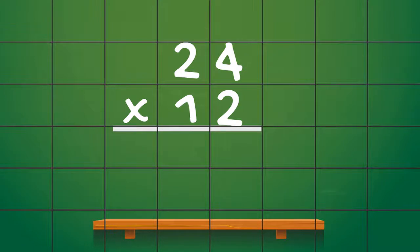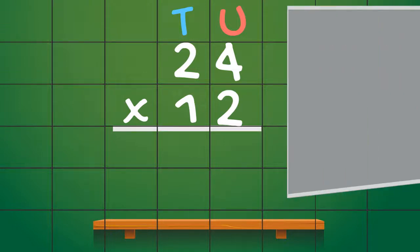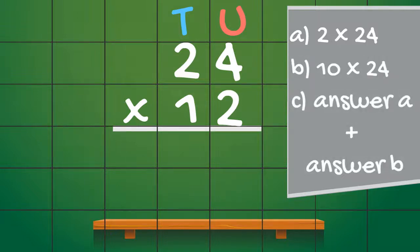Right, so the first thing we need is a sum. Let's use the same sum as the last video, 24 multiplied by 12. We're going to write our sum down, remembering to label our place value columns. Now even though it looks like one sum, what we have to remember from the last video is that there's actually three separate sums inside of here. There's 2 multiplied by 24, there's 10 multiplied by 24, and then these two answers need to be added together. So two multiplication sums and one addition sum.